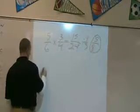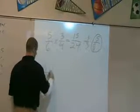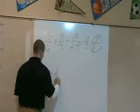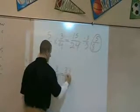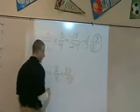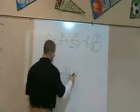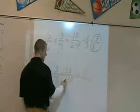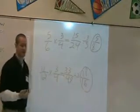Let's do one more example of multiplying fractions: eleven-twelfths times three-fourths. Eleven times three is thirty-three. Twelve times four is forty-eight. Can this be reduced? Yes — both are divisible by three. Three goes into thirty-three eleven times. Three goes into forty-eight sixteen times. The answer is eleven over sixteen.